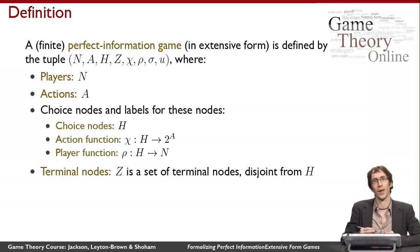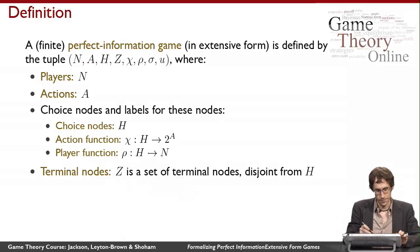That's the choice nodes. We have another kind of nodes which are the nodes where the game ends, called terminal nodes. This is a different set of nodes, disjoint from H, and we call it Z. This gives us all of the different nodes in our game tree.